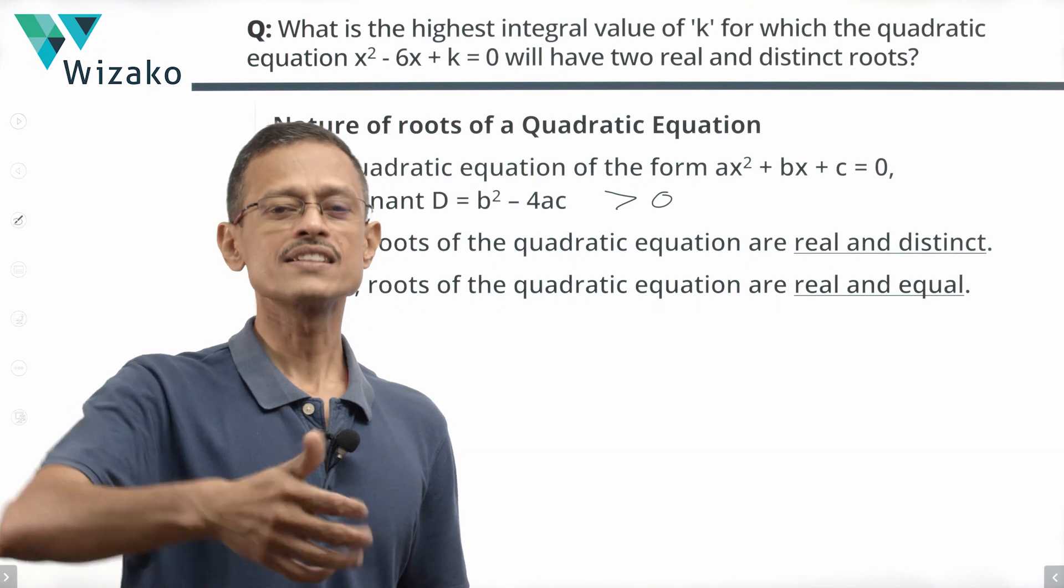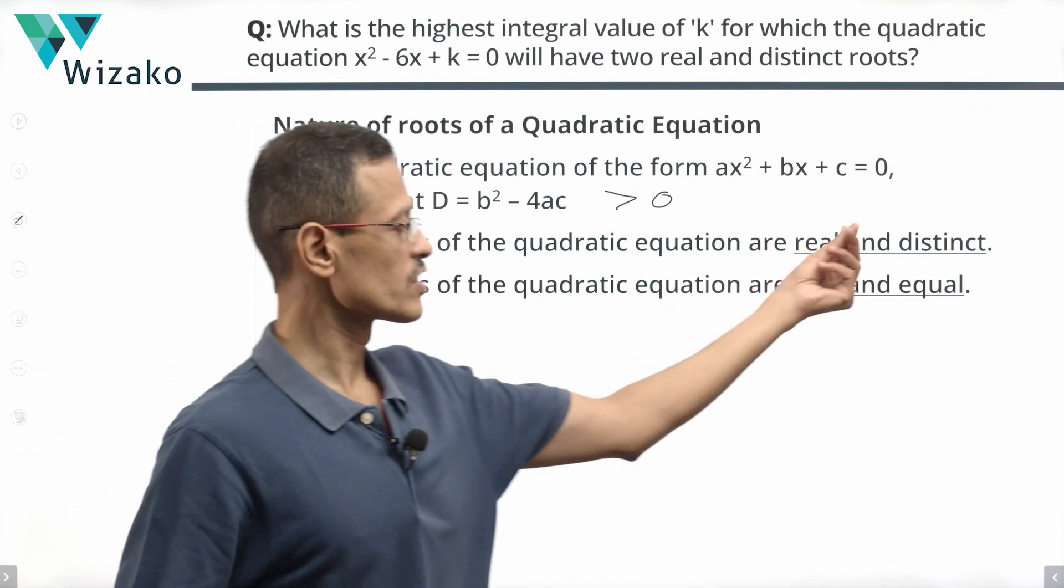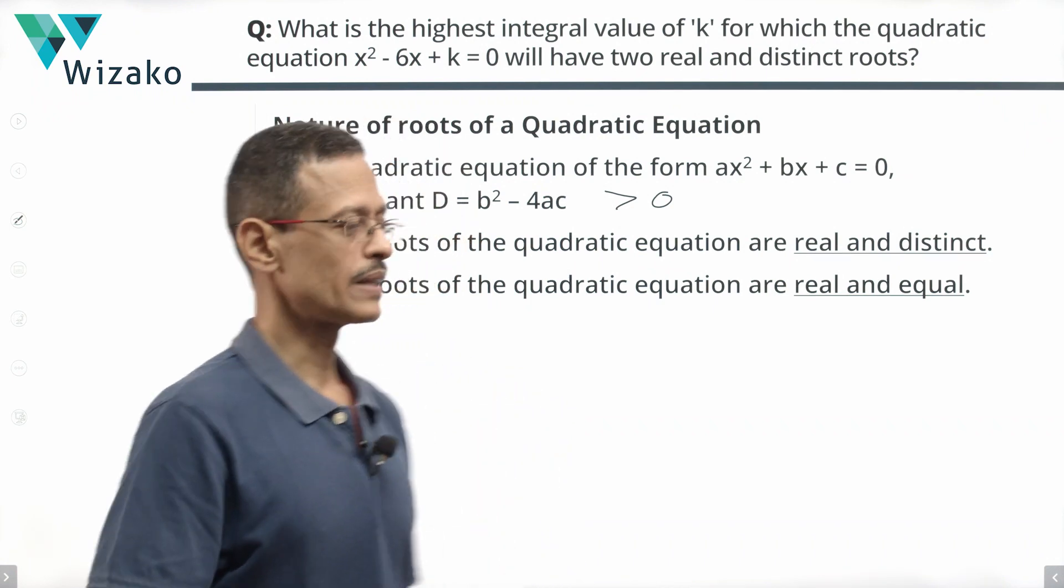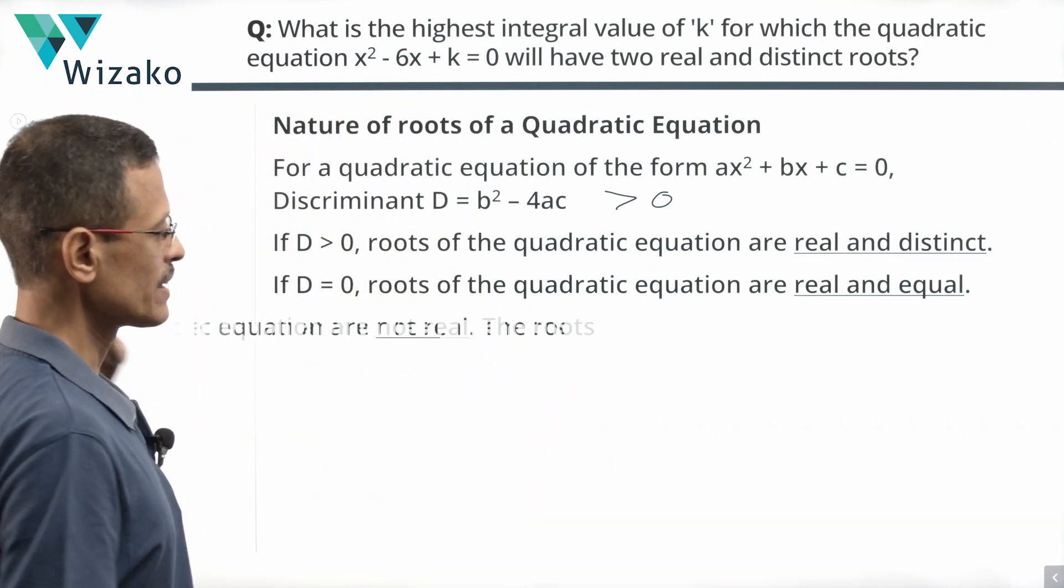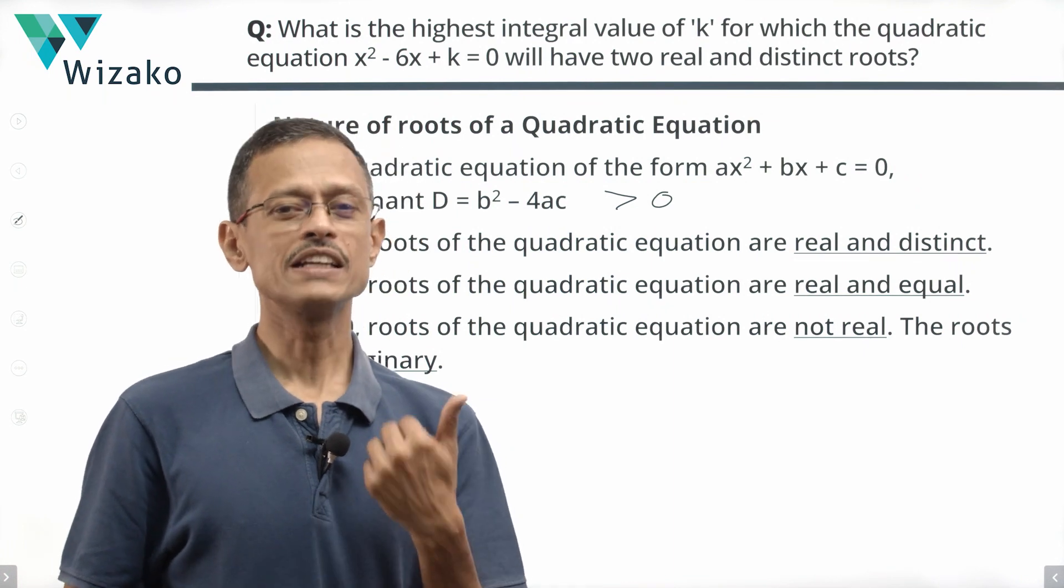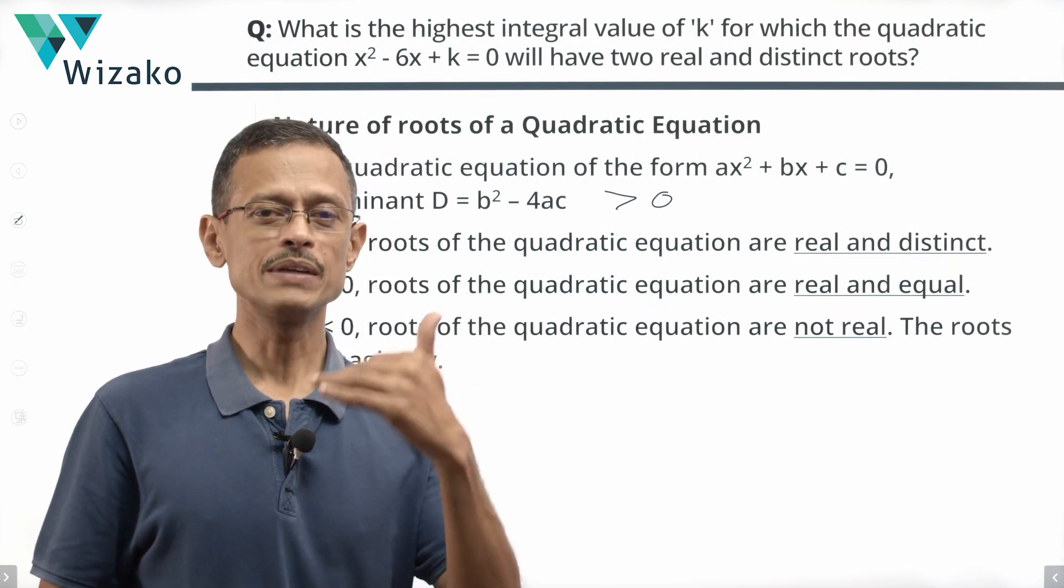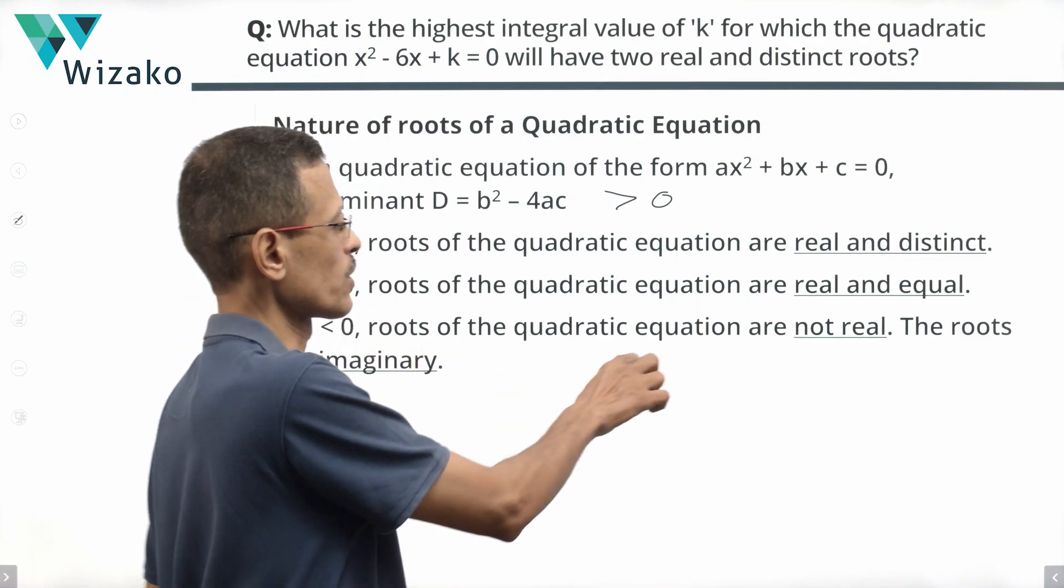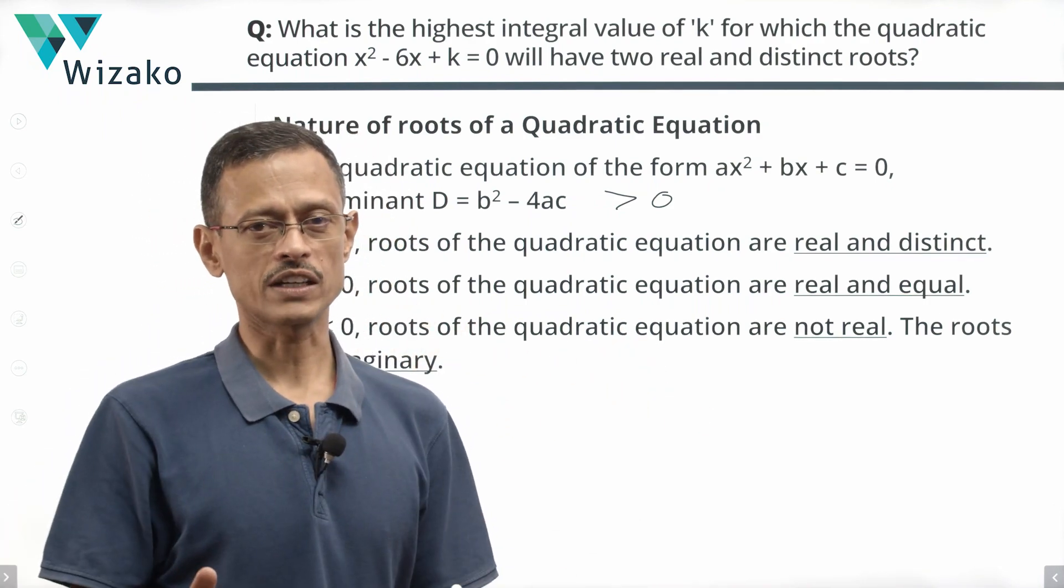Let's say one root is 3. The second root will also be 3. In this case, if one root is 3, the other root might be anything other than 3. The third possibility is when the discriminant is negative. In that case, the roots of the quadratic equation will not be real. They will be imaginary numbers. They are likely to be of the form a plus ib and a minus ib, which are essentially complex conjugates. Just knowing that they are not real is sufficient from a GMAT perspective.